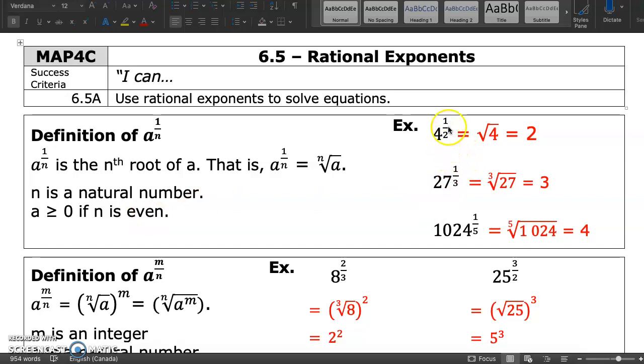So 4 to the exponent half, the denominator of the exponent is the root. So 4 to the half is the same as the square root. We always assume that the root is square with the symbol. And the square root of 4 is 2 because 2 times 2 is equal to 4.